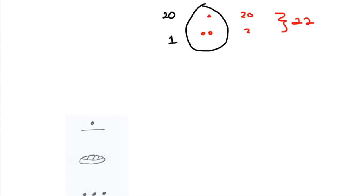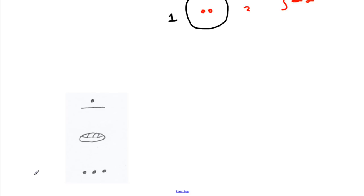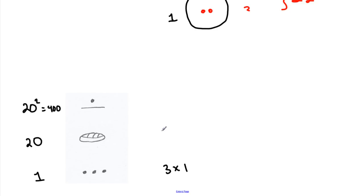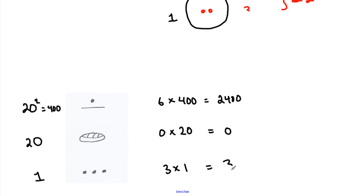Here's another example with three levels. The first level is ones, the next level is how many twenties you have, and the next level up is how many twenty-squareds, which is 400, you have. So this is three times one, this is zero times twenty, and this is a six times 400, so that's twenty-four hundred, this is zero, and this is three. Put it all together and you can read the number: two thousand four hundred and three.